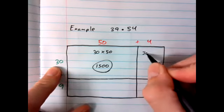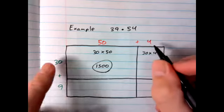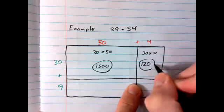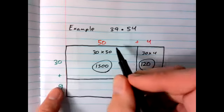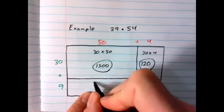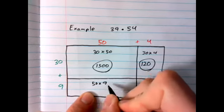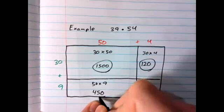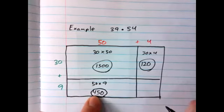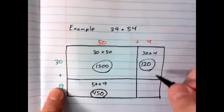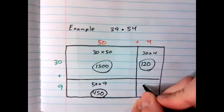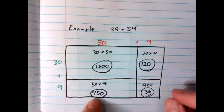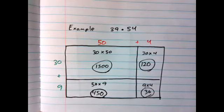30 times 4. So 3 times 4 is 12, one zero. Partial product: 120. Let's go on down. 9 times 50. 9 times 5 I know is 45, one zero on the end. Big partial product: 450. 9 times 4. I know that one. 9 times 4 is 36. I've got my four parts. Now I can add them up.